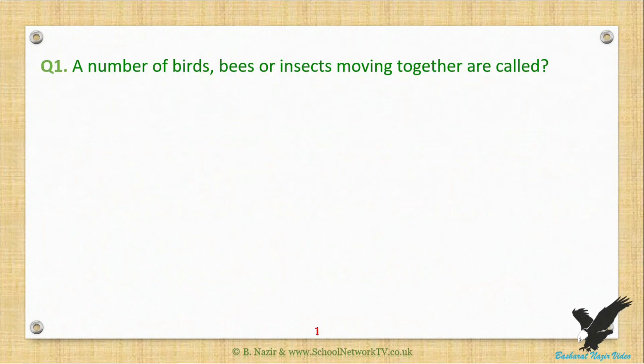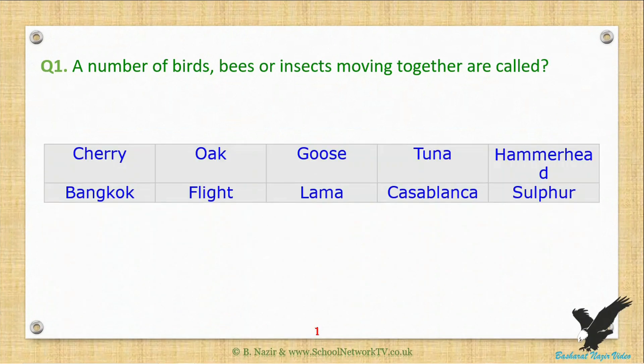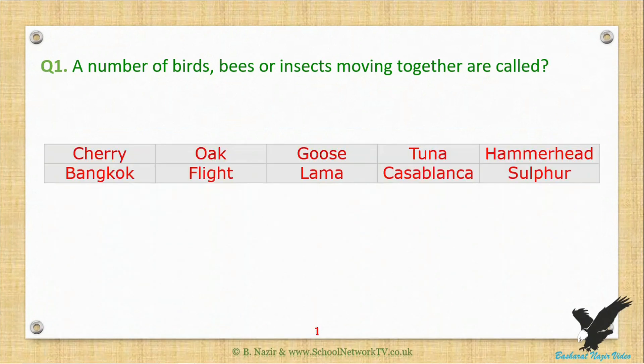A number of birds, bees, or insects moving together are called. Choose from one of these answers.